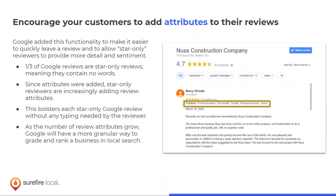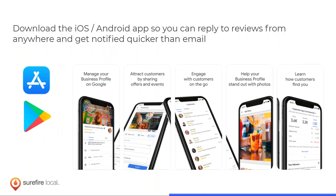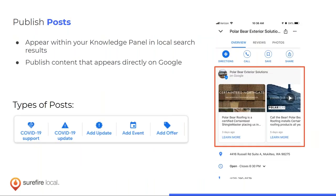One thing you don't fully control: customers can now leave attributes as part of their review — things like 'good value,' 'punctual,' 'professional.' This helps people quickly understand who you are. I can look at a listing and think: 'Good value, punctual, professional — I'll give them a call.' Sometimes decisions are made that quickly. You can manage all of this through the Google My Business app or from your computer. Surefire Local also has an app to help.